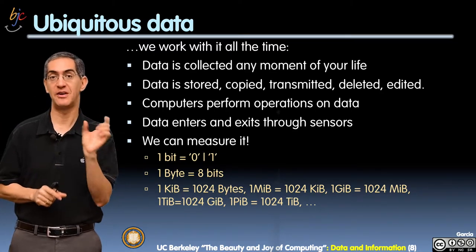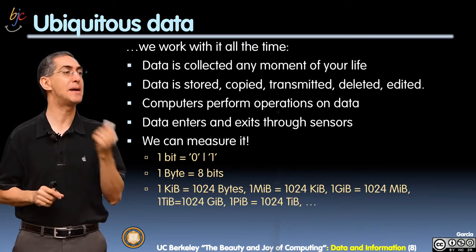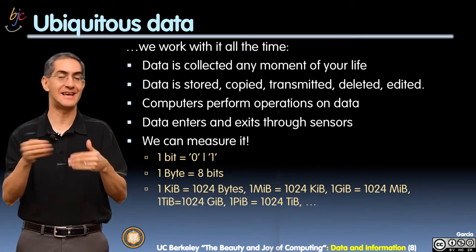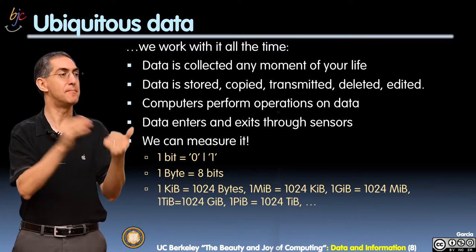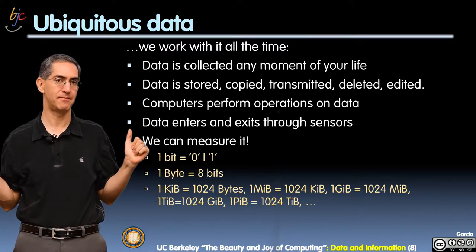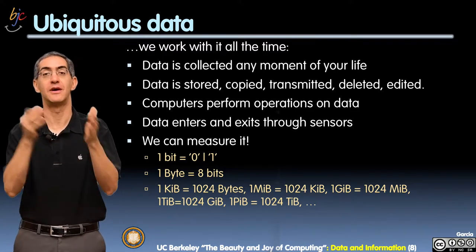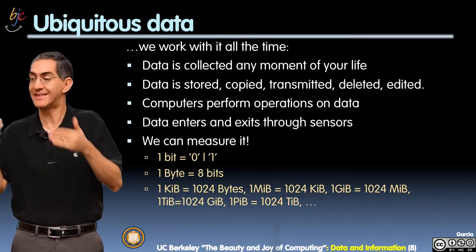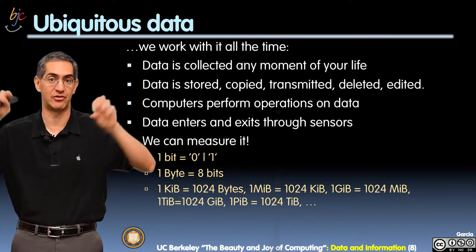1,024 kibibytes is a mebibyte. The reason it's not 'mega' — which is the IEC term for a million — it's 'mebi,' which means it's 2 to the 20th. So 2 to the 20th, or 1,024 kibibytes, is a mebibyte. 1,024 mebibytes is a gibibyte — that's kind of like a billion, a billion-ish.